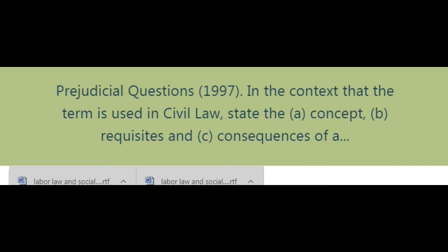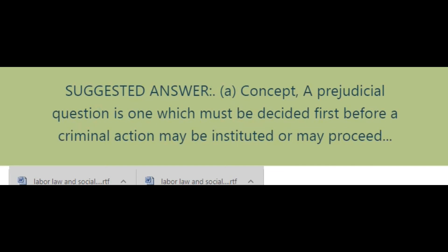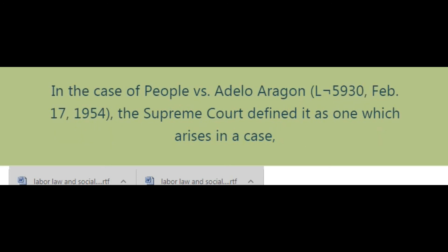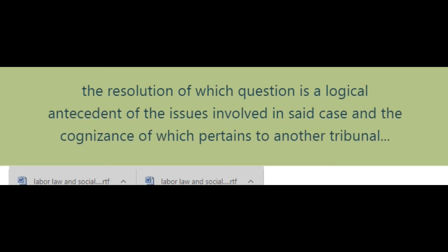Prejudicial questions, 1997: In the context that the term is used in civil law, state: (A) the concept, (B) the requisites, and (C) the consequences of a prejudicial question. Suggested answer (A): A prejudicial question is one which must be decided first before a criminal action may be instituted or may proceed, because a decision therein is vital to the judgment in the criminal case. In People v. Aragon (L-5930, February 17, 1954), the Supreme Court defined it as one which arises in a case, the resolution of which is a logical antecedent of the issues involved, and the cognizance of which pertains to another tribunal.